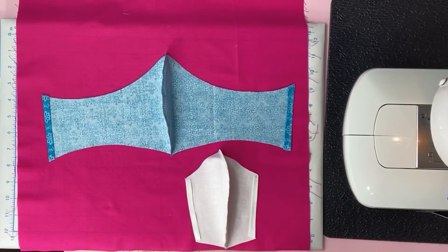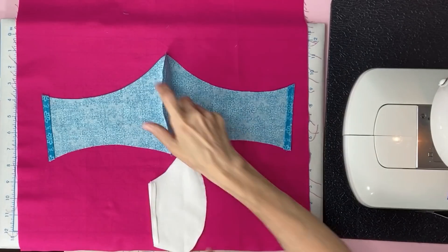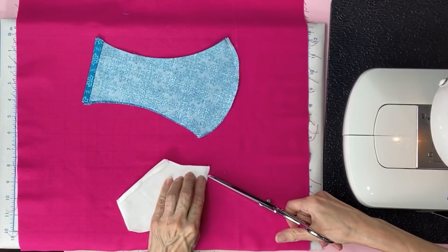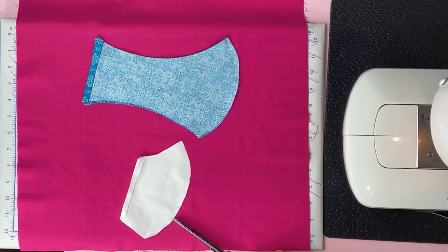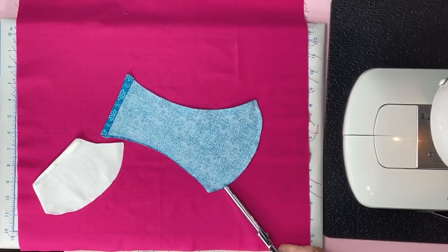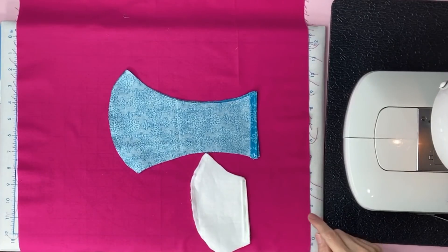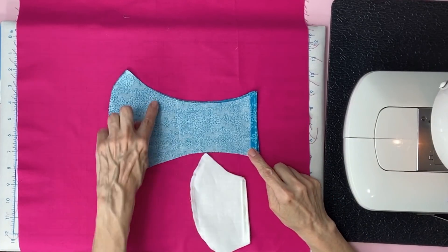Alright now that we've got our ends sewed down, we want to go ahead and clip our curves. Make sure you don't clip into the stitches. You'll notice the bottom is not as curvy as the top.